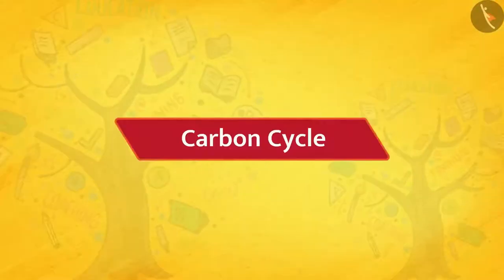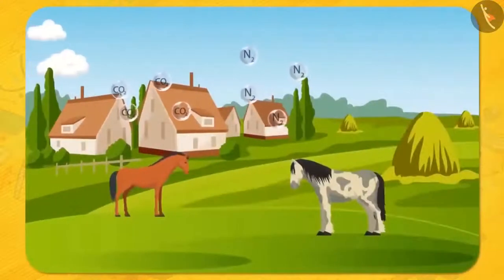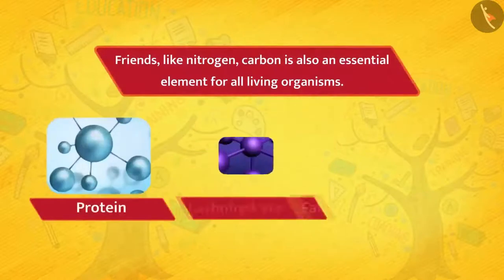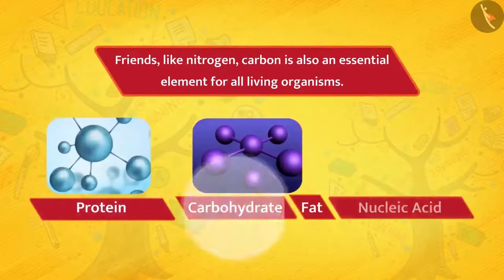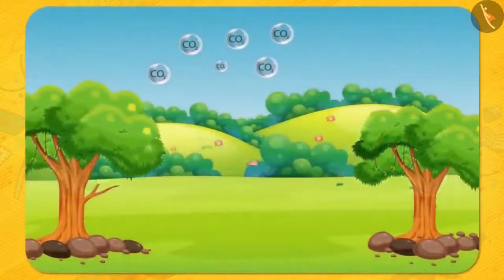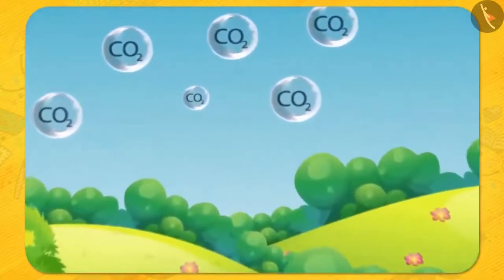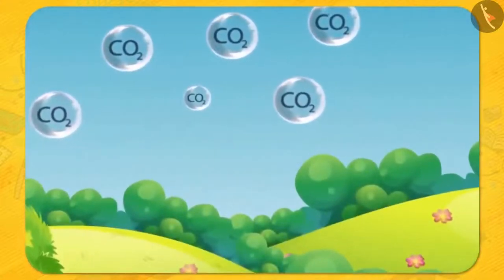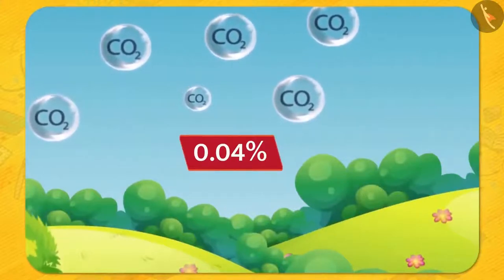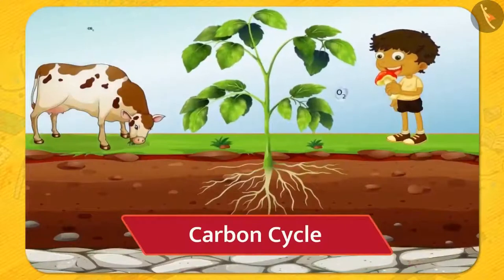Carbon cycle. Friends, like nitrogen, carbon is also an essential element for all living organisms. It is an important part of compounds like protein, carbohydrate, fat and nucleic acid. Do you know in what form carbon is found in the atmosphere? Carbon dioxide — absolutely correct. About 0.04% of the atmosphere is carbon dioxide and its percentage almost remains constant. Let's know how, from this carbon cycle.